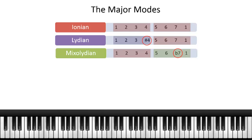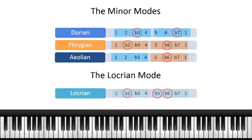There are basically two different types: there's a major mode type and then there's a minor mode type. And then the Locrian, which is the seventh mode, is a minor mode, but it has a minor seven with a flat five. It's also the beginning of the development of the altered chord scale.